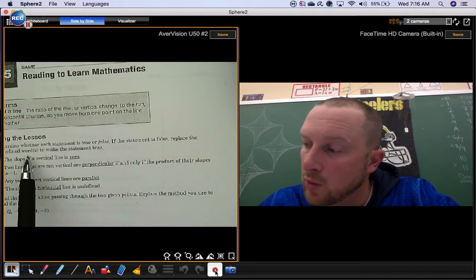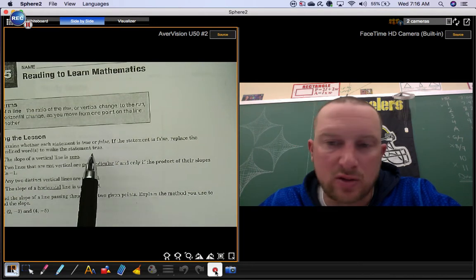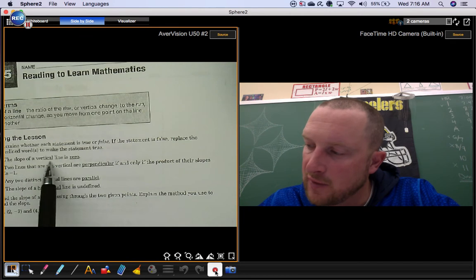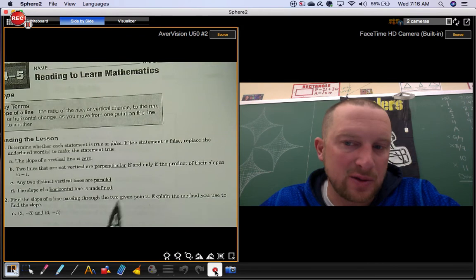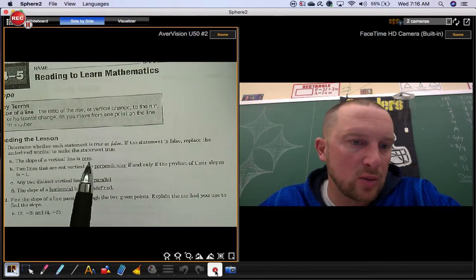False. The slope of a horizontal line is zero. We've got to change this word though. What is the slope of a vertical line? It's undefined. Remember, it's a number over zero. You can't divide by zero.